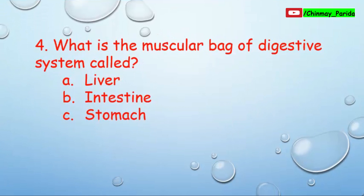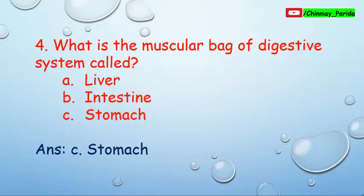Question number four: What is the muscular bag of the digestive system called? The options are Option A: Liver, Option B: Intestine, Option C: Stomach. The answer is Option C — stomach. The stomach is called the muscular bag of the digestive system.